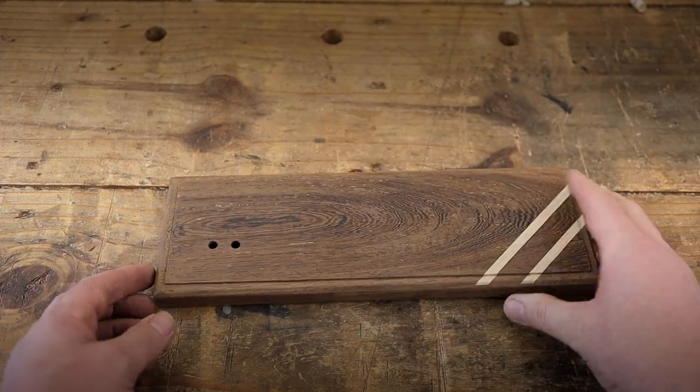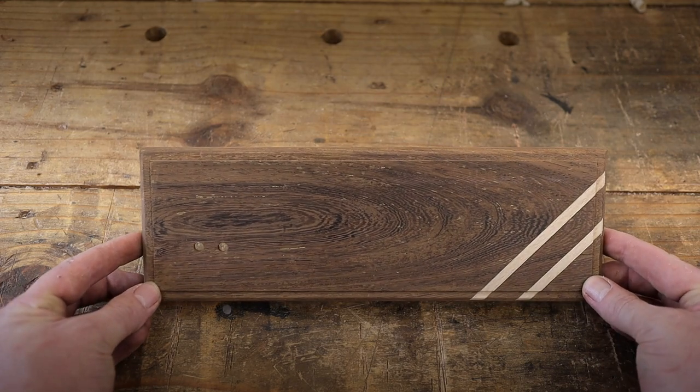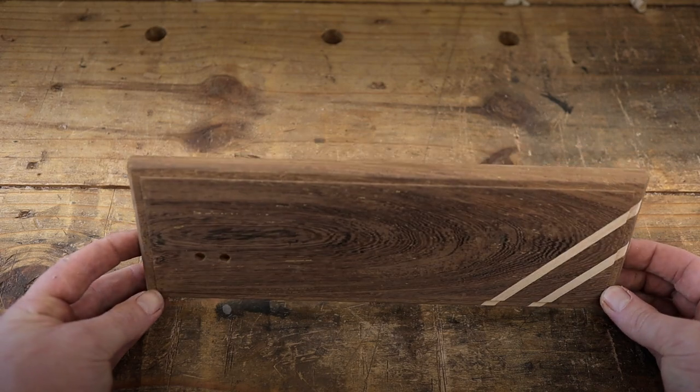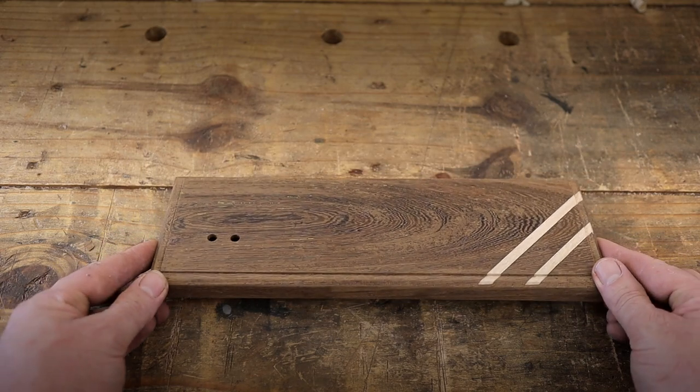And here is the front piece done. As you can see we have two holes, one for the power button, one that will be for the LED and our two inlays with some bit of extra rabbiting on the sides.